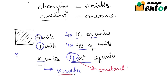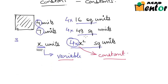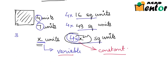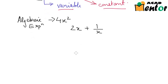Now that we know what variables and constants are, we can define algebraic expressions. Algebraic expressions are nothing but a combination of variables, constants, and also exponents of those variables. For example, 4x² is an algebraic expression. Similarly, 2x + 1/x is also an algebraic expression.